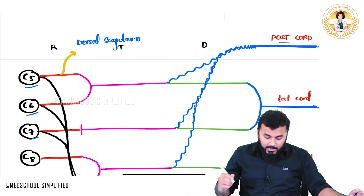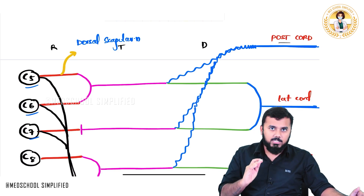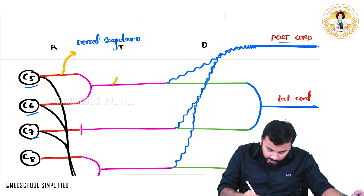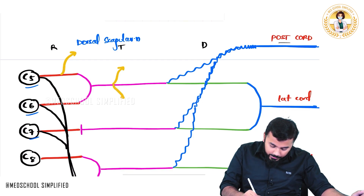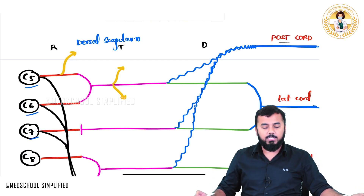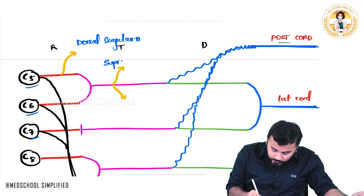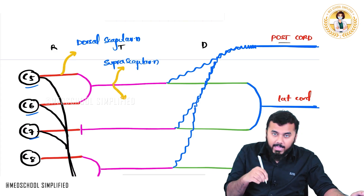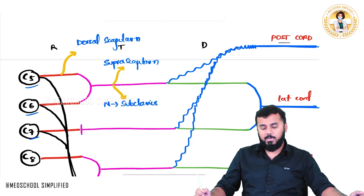From the first trunk, a small nerve goes up — this is called the suprascapular nerve. And there is another branch of that trunk going down, called the nerve to subclavius.